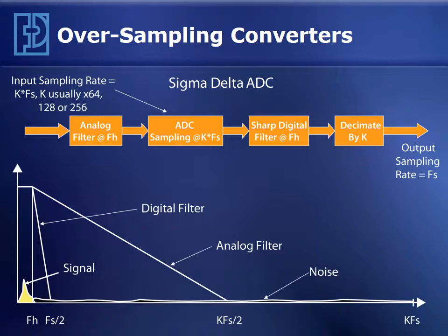After oversampling the output of that analog filter, internal to the converter, there is a sharp digital filter applied to the data. This is an algorithm applied to the sampled data. After the sharp digital filter is applied, you decimate by a factor of K — whatever the oversampling ratio was — and you end up with an output sampling rate of F sub S.